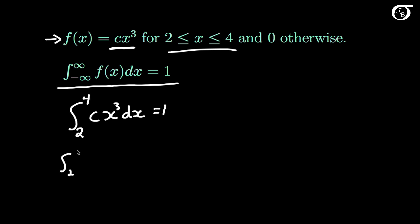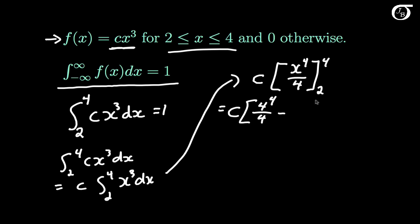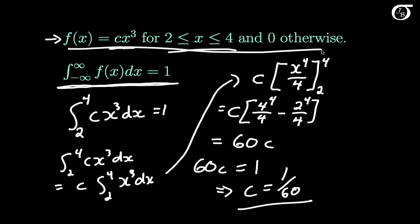The integral from 2 to 4 of c times x cubed dx is equal to c times the integral from 2 to 4 of x cubed dx. Carrying out that integration, we get c times x to the 4th power over 4, evaluated at 2 and 4. This is equal to c times (4 to the 4th power over 4 minus 2 to the 4th power over 4), which equals 60 times c. Since the area under the entire curve must equal 1, we have 60c = 1, so c = 1/60.